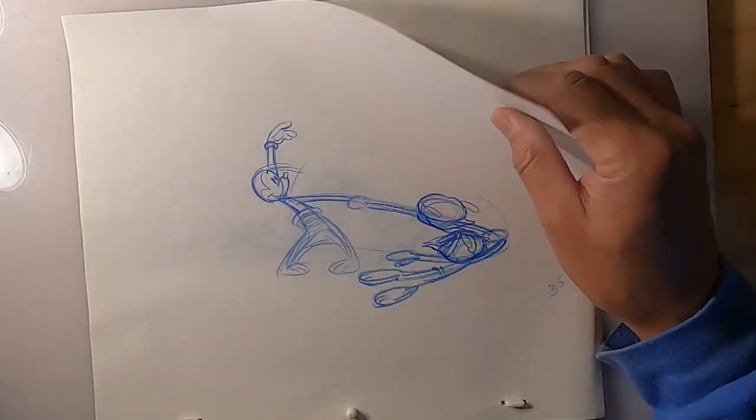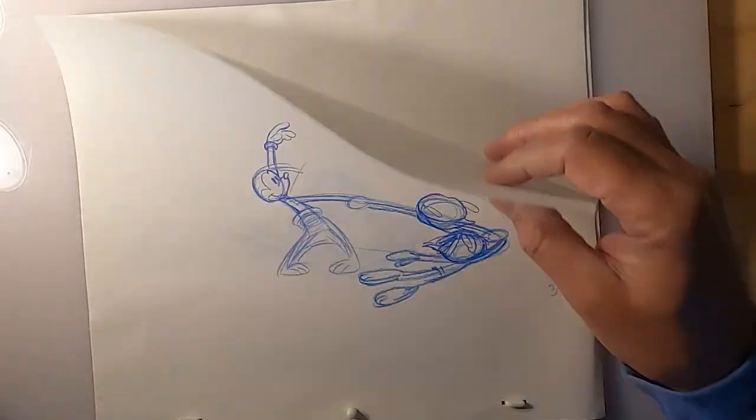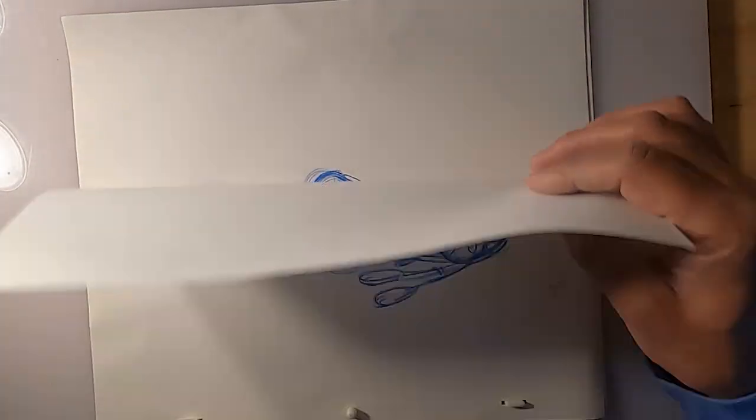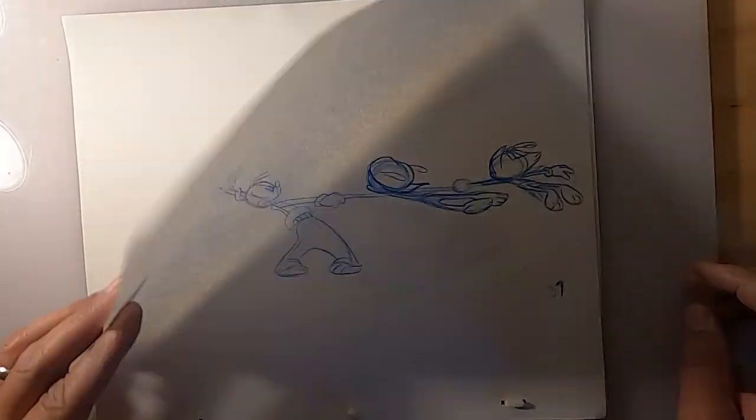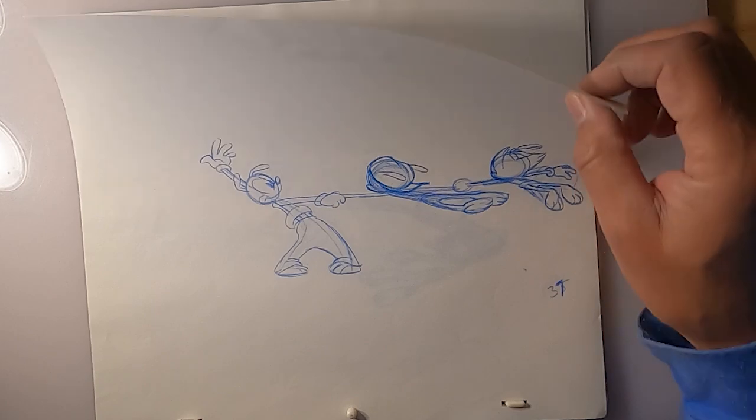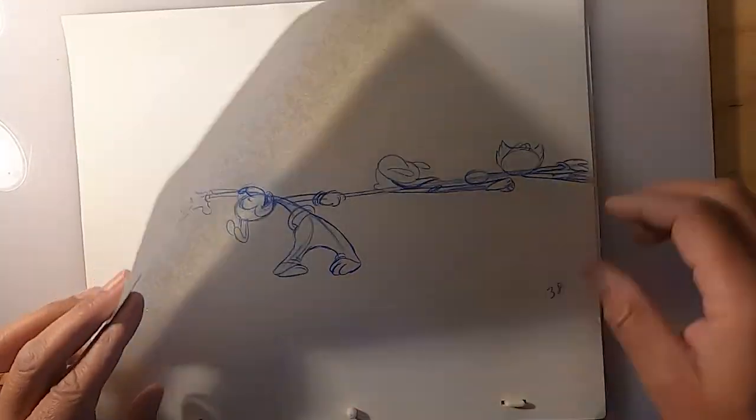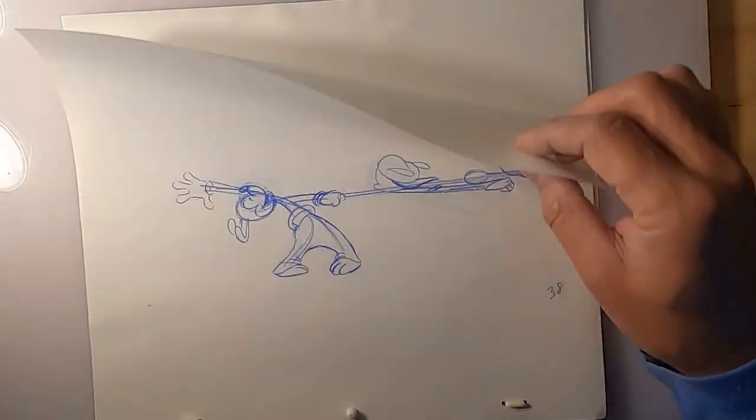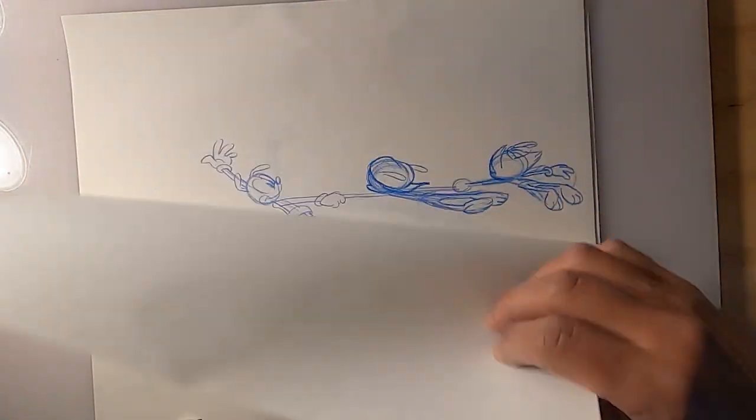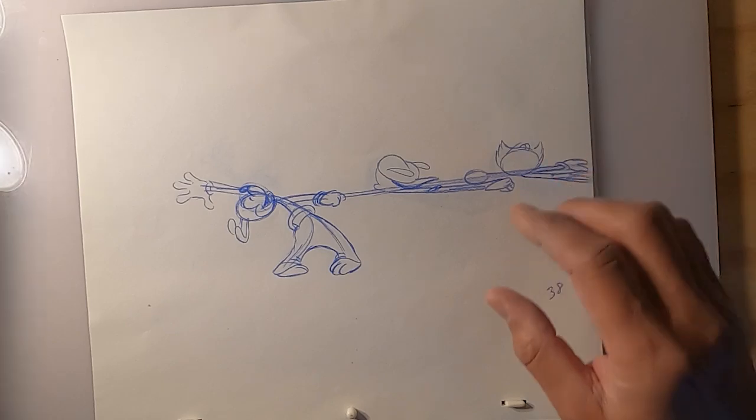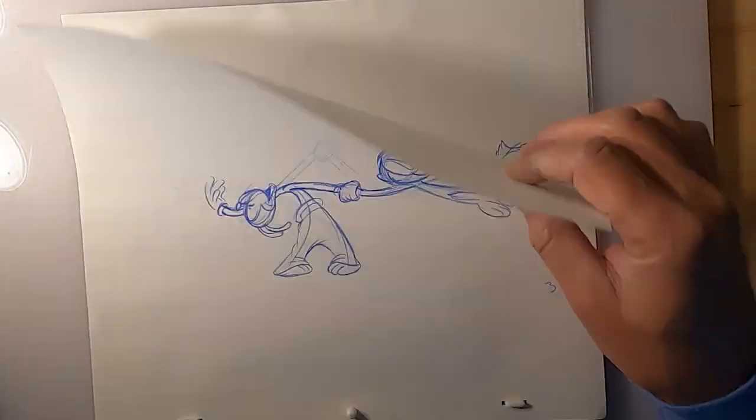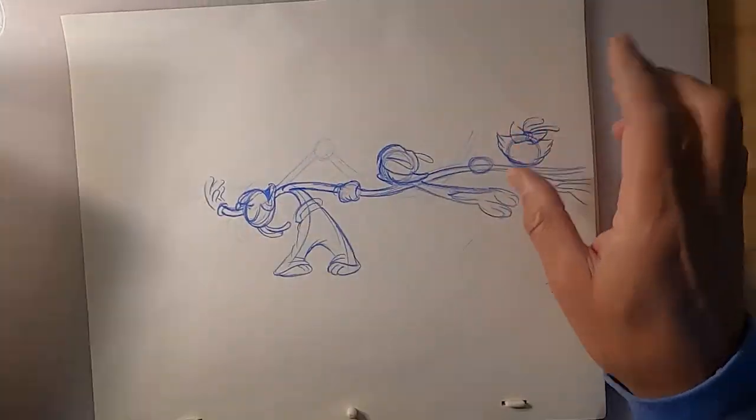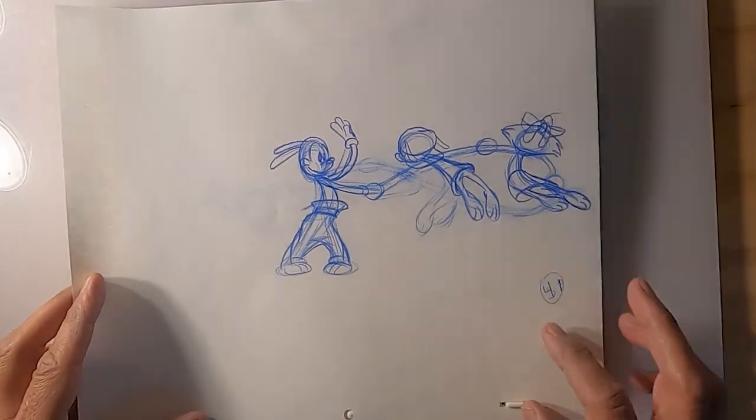As he continues whipping them around. And he goes into his big pose. His left arm goes up. His right arm is holding on to them as he whips them around, continuing. And his hand starts to come down. And then he snaps up.